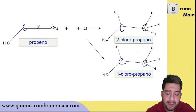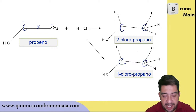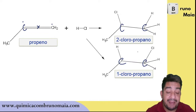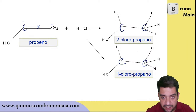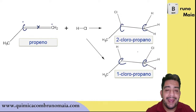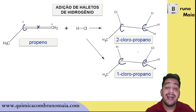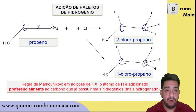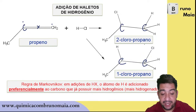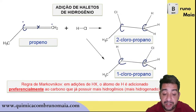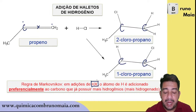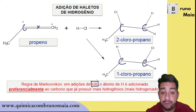Every time there is more than one possibility, I have to consider all those possibilities — I must form both predicted substances. However, it's important to know that one of these substances is formed in greater quantity. So there exists a rule of preference, which we call Markovnikov's rule.